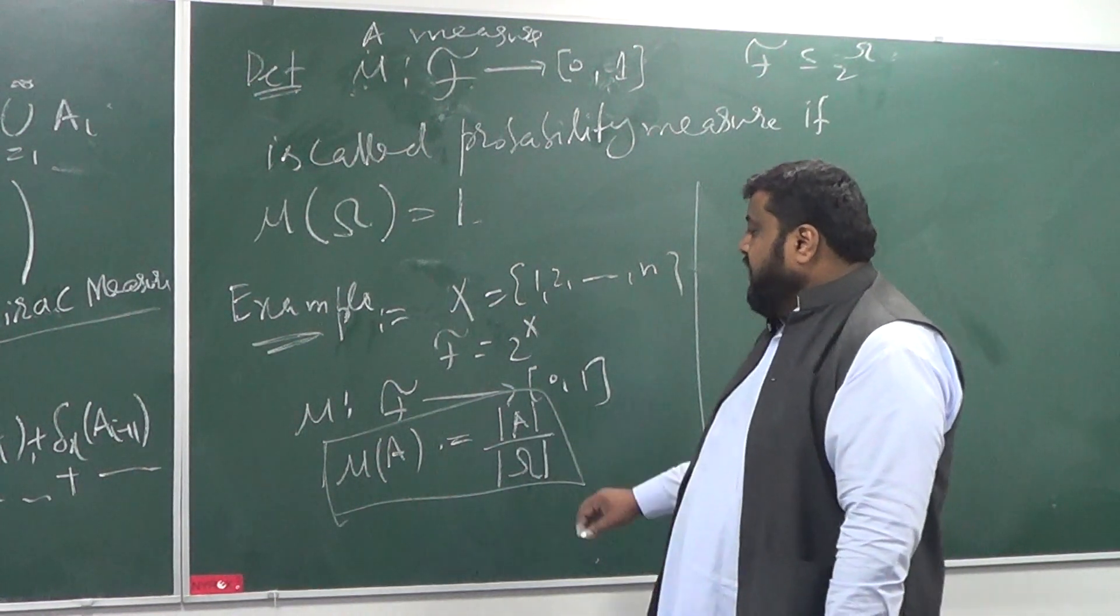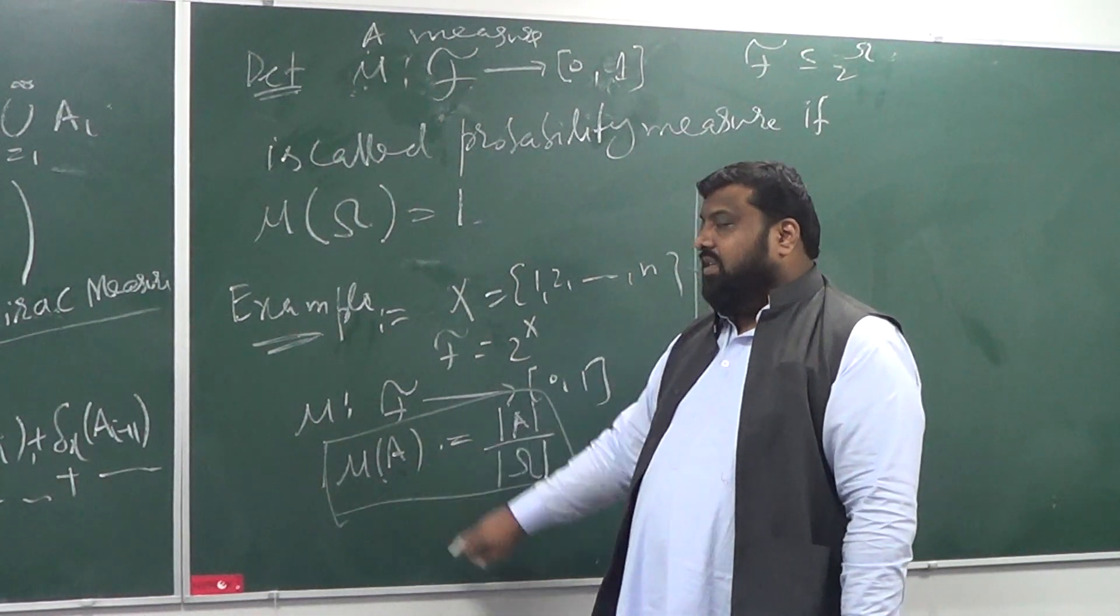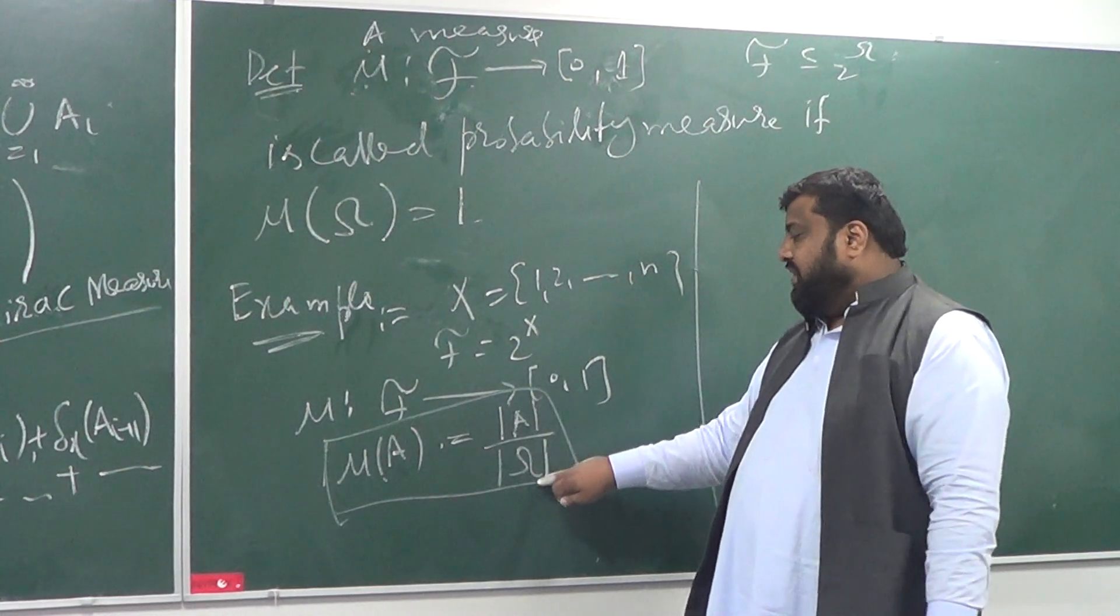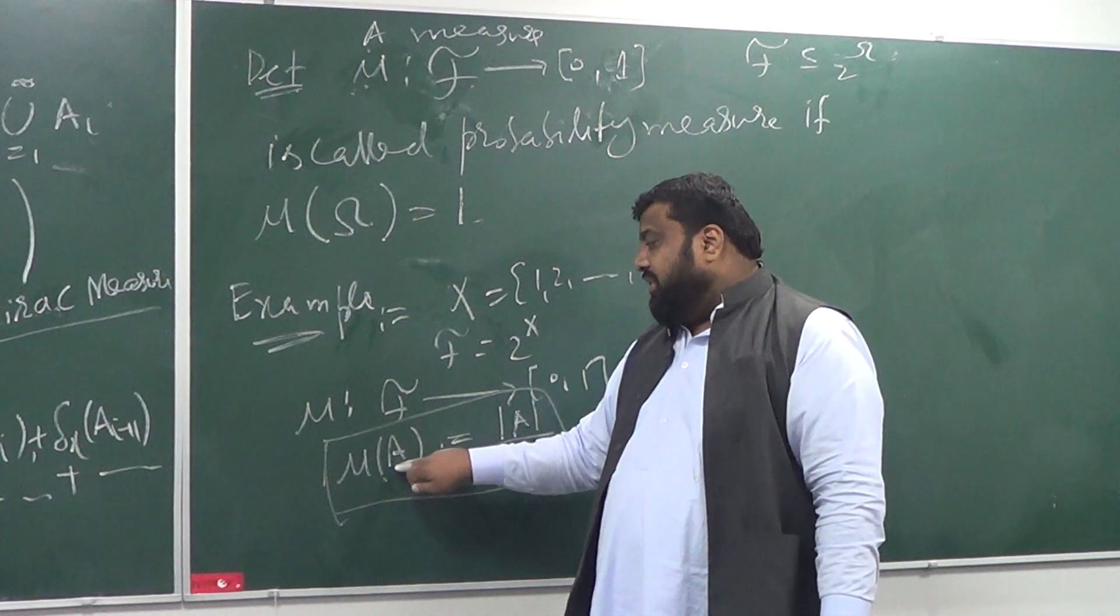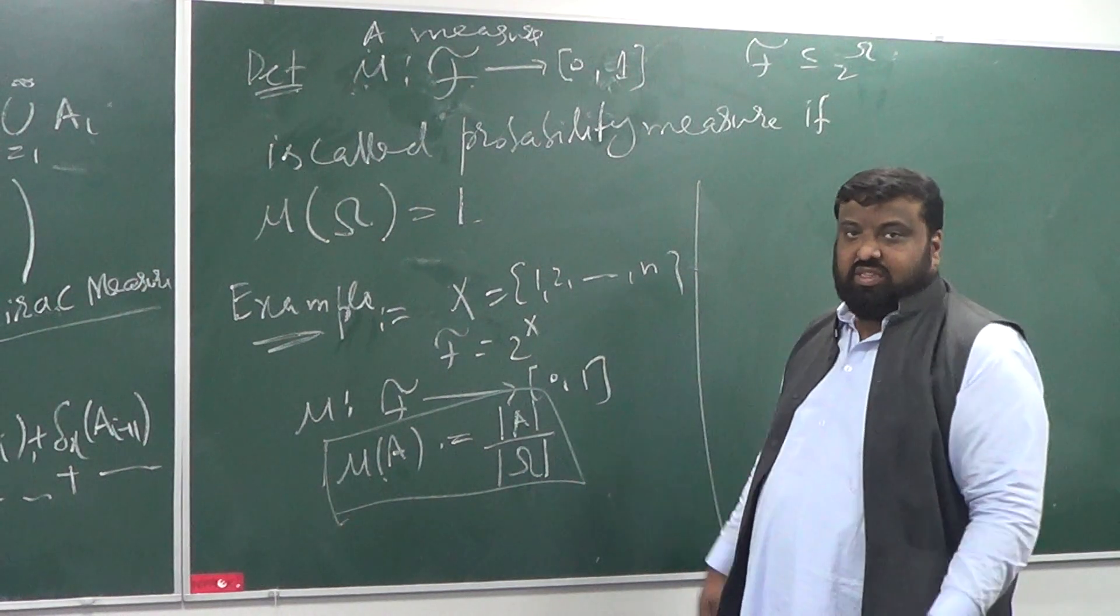What will happen if you put an empty set here? So, you're going to get an empty set, order of empty set divided by order of omega, so you're going to get a 0. What happens if you put omega here? You get a 1. Two conditions are satisfied.